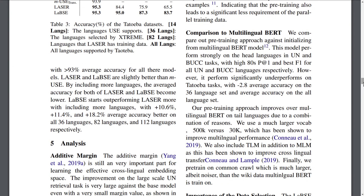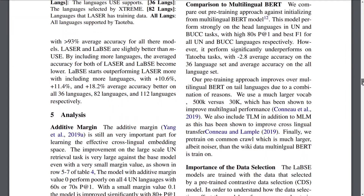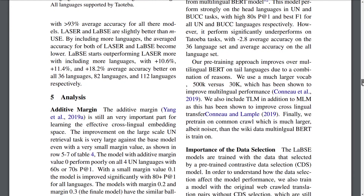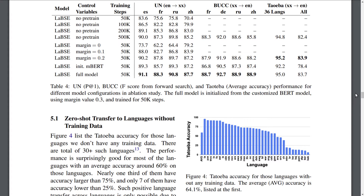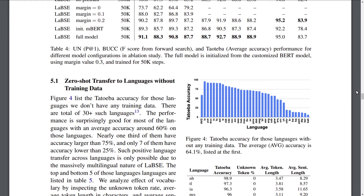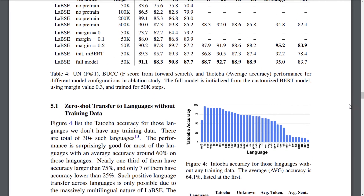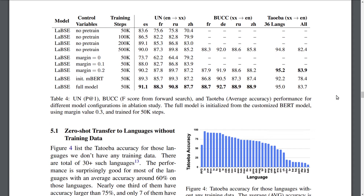The authors also do various analyses of the new multilingual model, showing that it works particularly well for low-resource languages — it can even achieve some performance for languages that have almost no or zero resources available. This seems to stem from combining training on monolingual data as well as parallel data, which appears to be a beneficial combination.